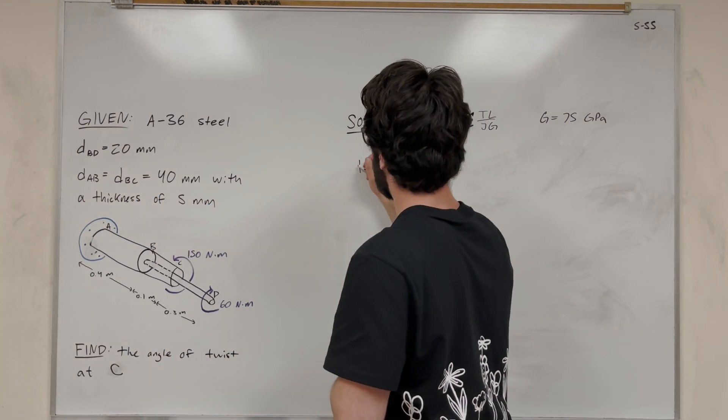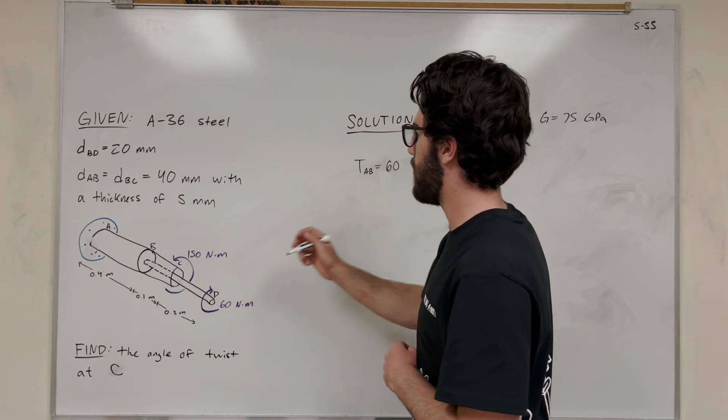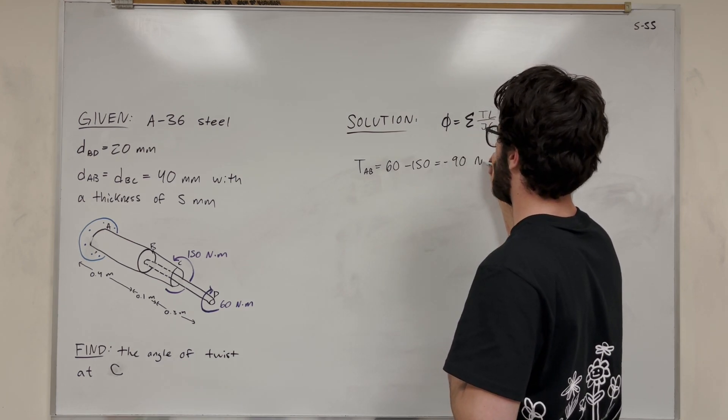To do that, we're going to add them up. Let's make the counterclockwise direction positive. So in AB, it's going to be positive 60 minus 150. Torque AB equals positive 60 minus 150, which equals negative 90 Nm.